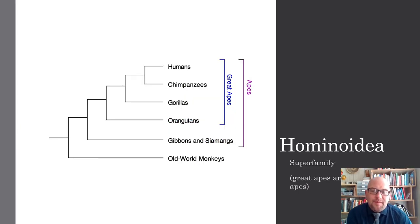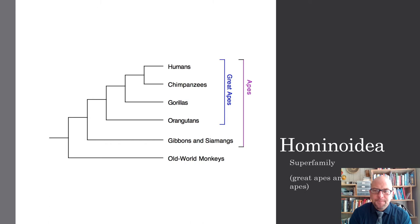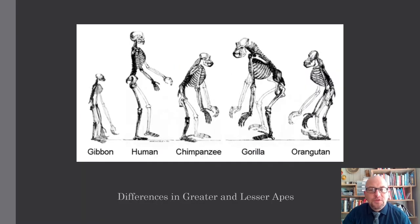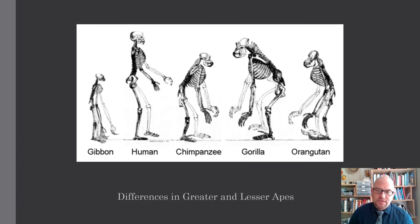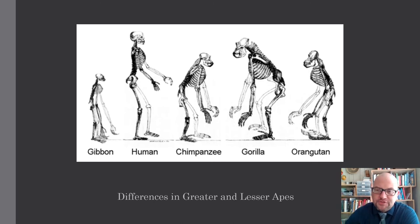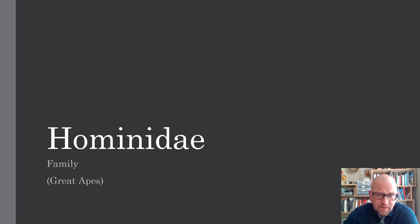Let's talk about our superfamily, which is Hominoidea — the great apes. There are no monkeys in this group. Both the greater and lesser apes are found within this group. The greater apes include humans through orangutans. Gibbons are actually lesser apes. You can see a serious difference in size from the lesser to the greater apes. Hominidae is our family, which is only the great apes.